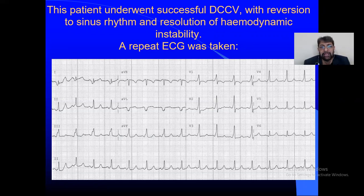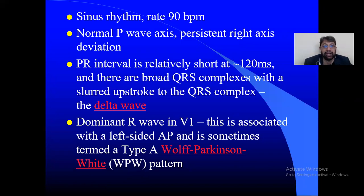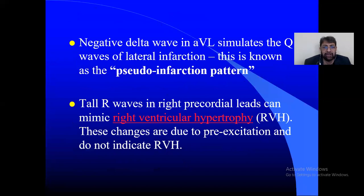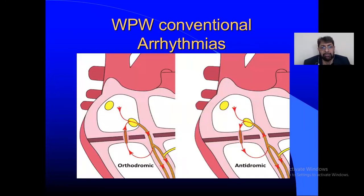After cardioversion and resolution of hemodynamic instability, a post-conversion ECG was taken clearly showing broad QRS, dominant R in V1, and a delta wave. In summary: sinus rhythm, rate 90, normal P axis, persistent right axis deviation, short PR interval, delta wave, dominant R wave — this is associated with a left-sided accessory pathway and is termed Type 1 WPW pattern. This also explains the pseudo Q waves and RVH features seen on ECG, which are not true RVH.